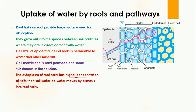The cytoplasm of the root hair has high concentrations of salt, so high salt concentration is present in this area. Because of this high concentration, water will move from outside to inside — from higher water potential to lower water potential — by the process of osmosis.